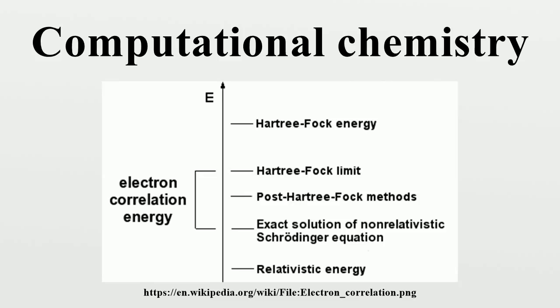The term theoretical chemistry may be defined as a mathematical description of chemistry, whereas computational chemistry is usually used when a mathematical method is sufficiently well developed that it can be automated for implementation on a computer. In theoretical chemistry, chemists, physicists and mathematicians develop algorithms and computer programs to predict atomic and molecular properties and reaction paths for chemical reactions. Computational chemists, in contrast, may simply apply existing computer programs and methodologies to specific chemical questions.